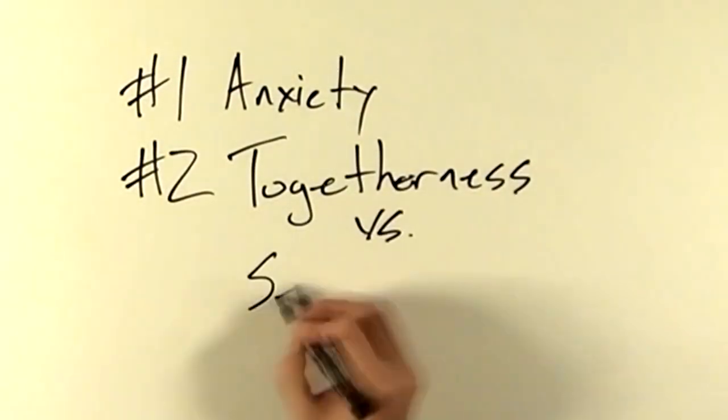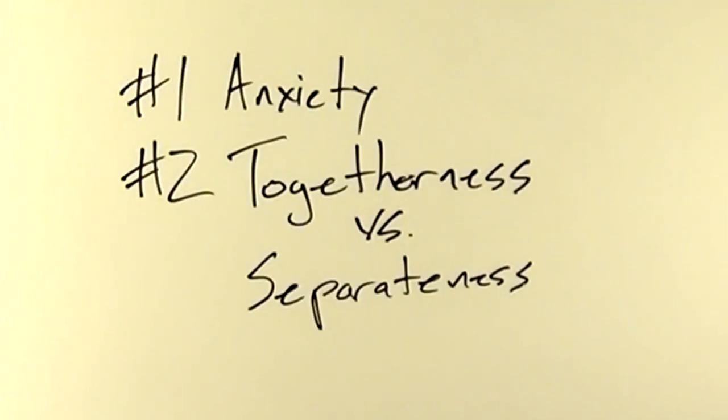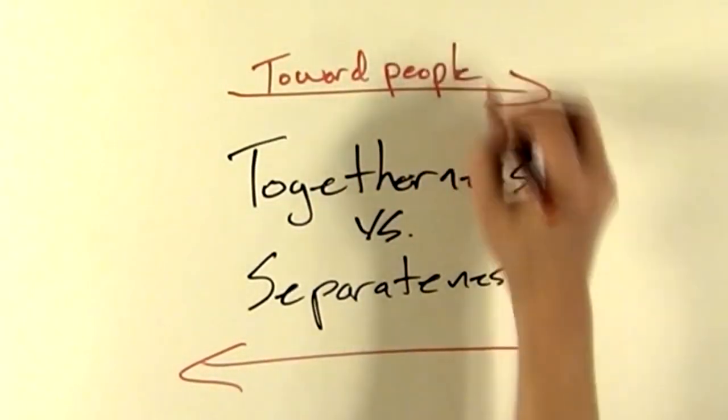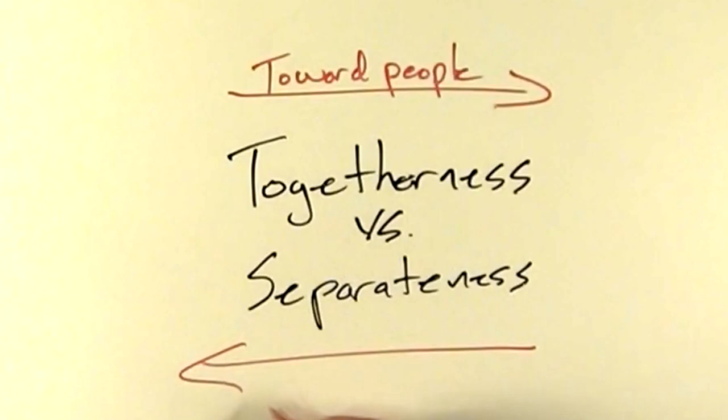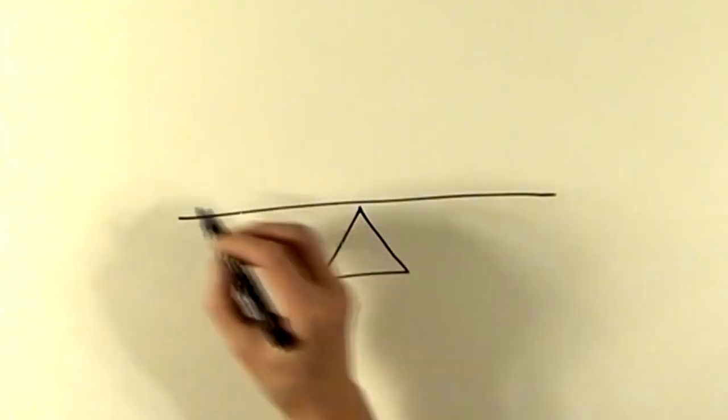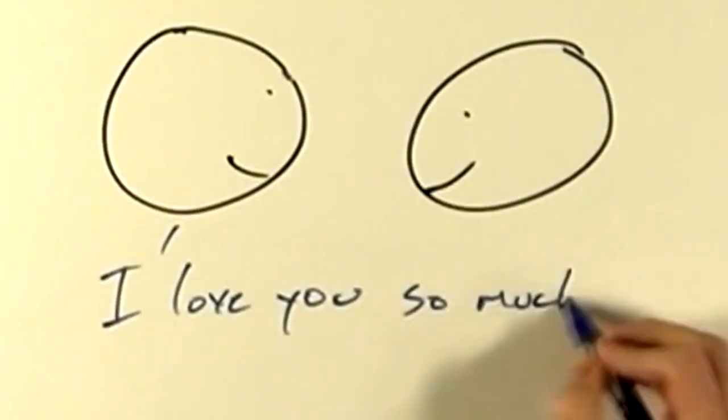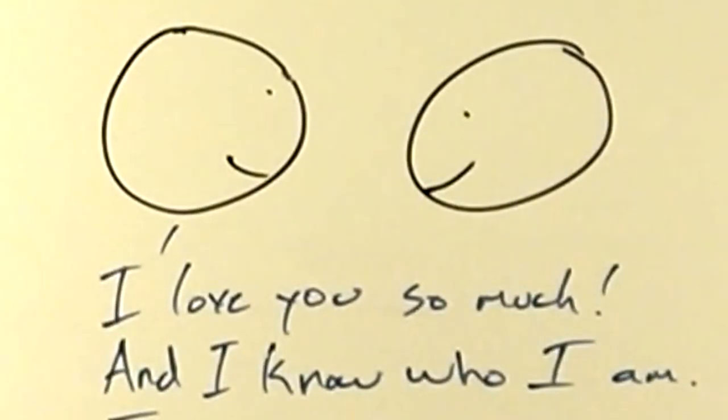Number two, togetherness versus separateness. Bowen believed that all life possesses these two opposing forces. The togetherness force compels us to be with others, to seek approval, and to attach to others. And the separateness force compels us to be independent, to have our own beliefs, and to not be smothered by others. Bowen asserted that we strive for balance between these two forces, and if they are balanced well, we can be close to our loved ones without losing our sense of individuality.